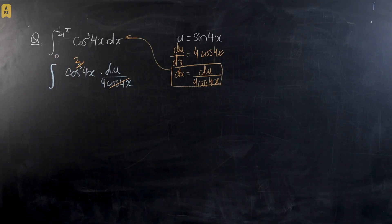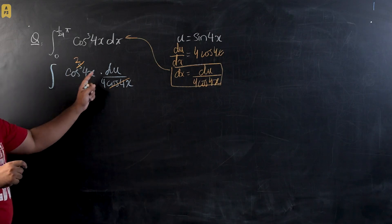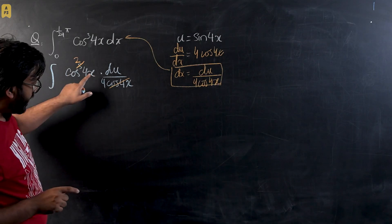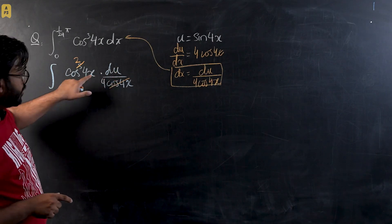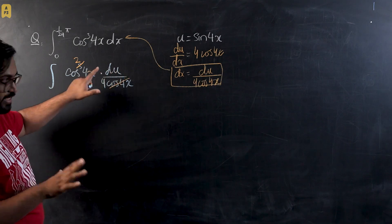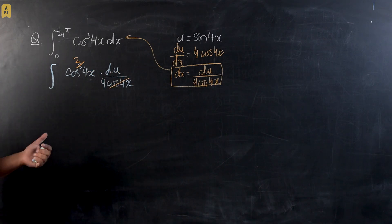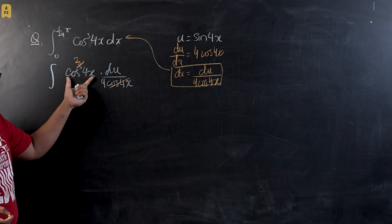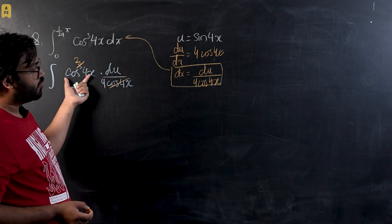Now this is not a successful substitution because as you can see, we have two variables right now. You have x and you have u in the same expression. So we are going to get rid of this cos² 4x in terms of u.